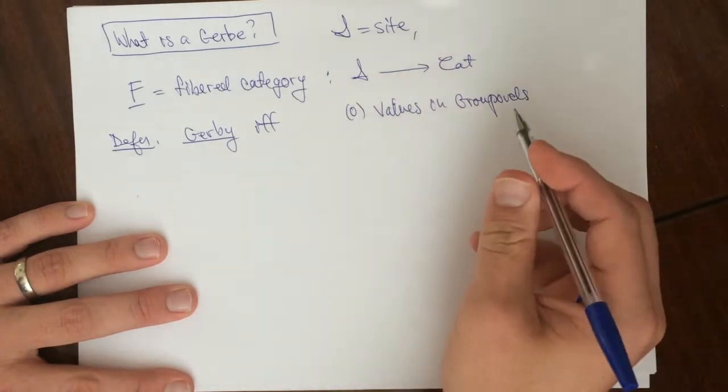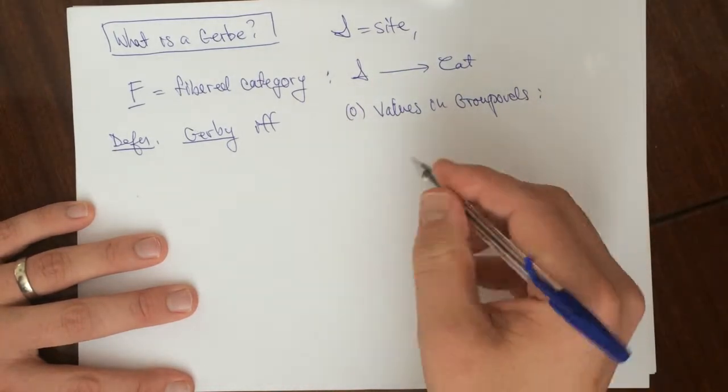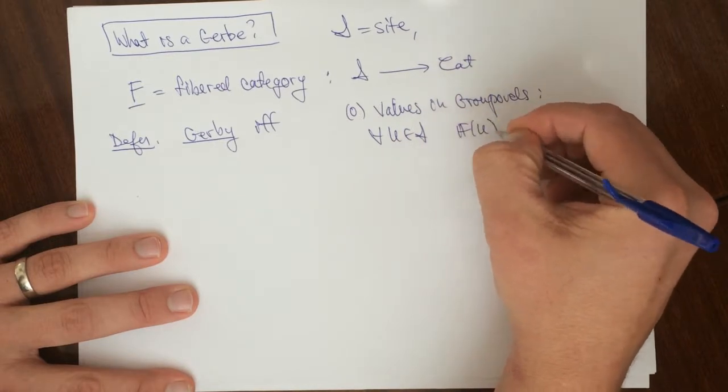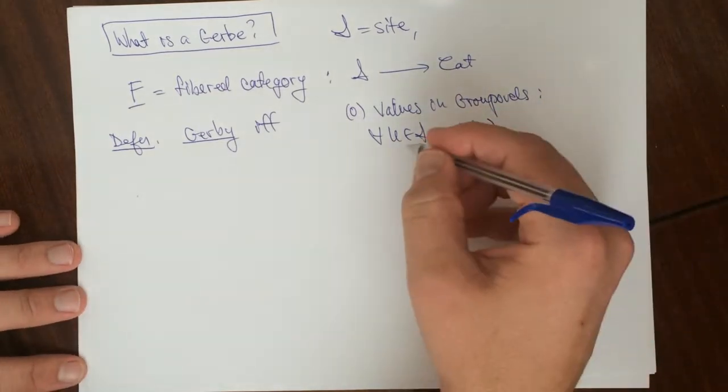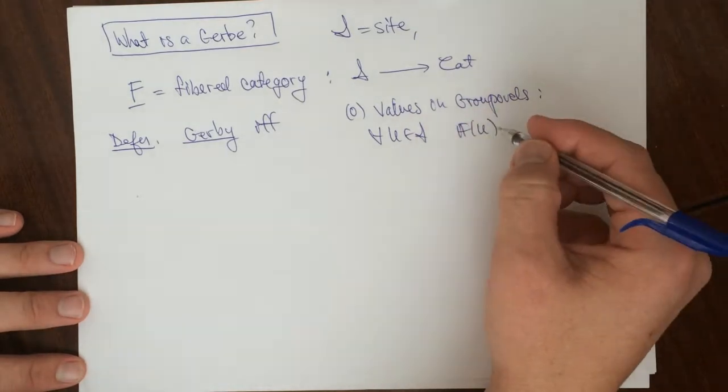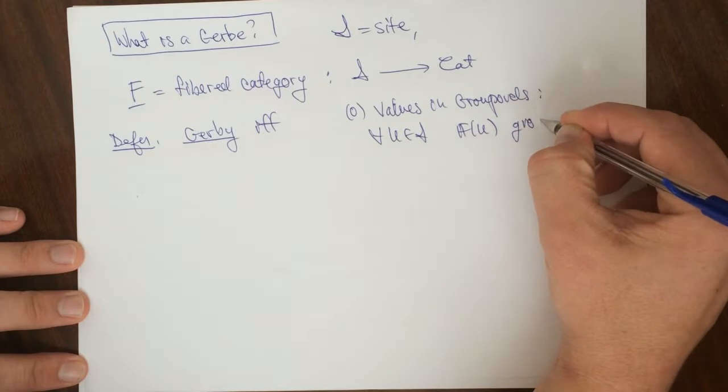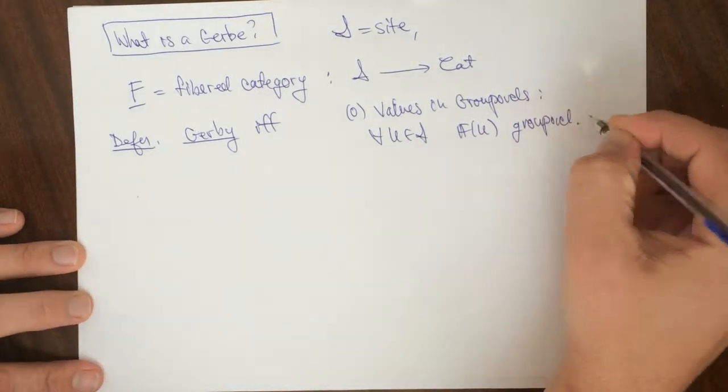Okay, so this means that for all U in S, F of U is a groupoid. So this is a category with one object. Sorry, not category with one object. It's a category where all the morphisms are invertible. So this is a groupoid.